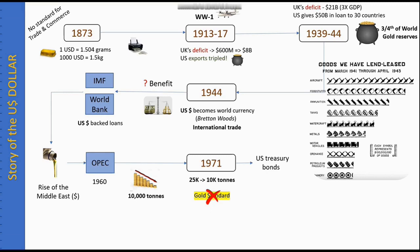The US began borrowing money from institutional investors and foreign nations, who invested in Treasury bonds. This means the US promises to return the money with interest — lend them $100, and they'll repay with interest over 5, 10, or 30-year terms, paying interest quarterly or annually. That is the trust backing the US dollar: confidence that the US government will pay you back. However, as of 2022, foreign countries hold about 7.4 trillion dollars in US securities.